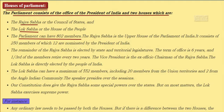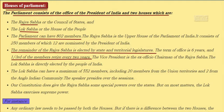Rajya Sabha is known as the upper house of Parliament of India. It consists of 250 members, out of which 12 are nominated by the President of India. The remainder are elected by state and territorial legislatures. The term of office is 6 years, and one third of the members retire every 2 years. The Vice President is the ex-officio chairman of the Rajya Sabha.